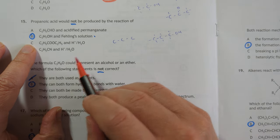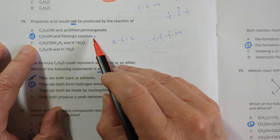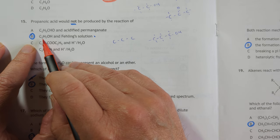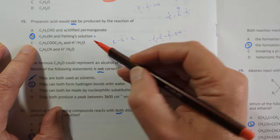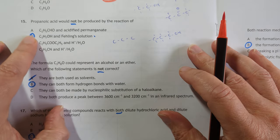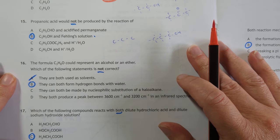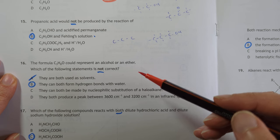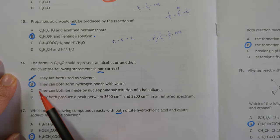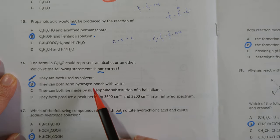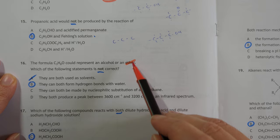Propanoic acid would not be produced by the reaction of... It's an interesting one, this one. Fehling's is not a powerful enough oxidizing agent to turn that into propanoic acid. It's not great. I perhaps would have had one with a different number of carbons. So, it definitely couldn't be produced. That's their call. Number 16. They are not correct. They can't both form hydrogen bonds because ethers can't. Simple.